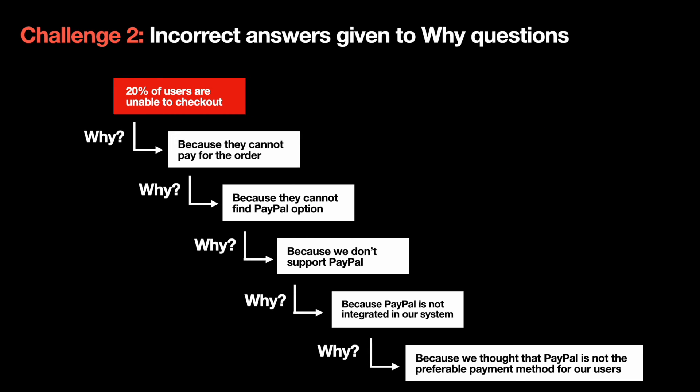Second, 5 Whys might not be the most helpful technique if you get the wrong answer to some why question. Wrong answers can break the logic of the trail. But this might not be evident if you read the trail from top to bottom. Is it possible to validate the trail? Yes.